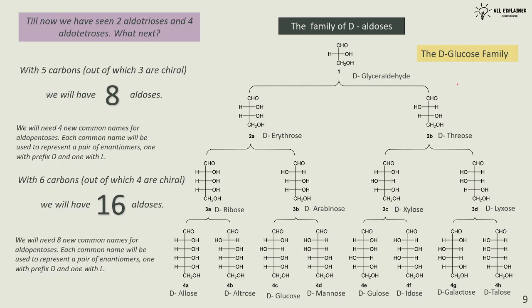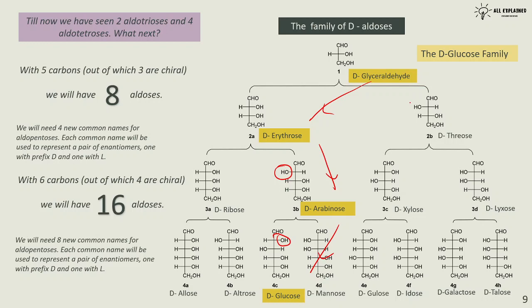The D-glucose family pathway: starting from D-glyceraldehyde, going to erythrose (OH at right), then to arabinose (first OH appears on the left), then to glucose (fourth OH back on the right). This family — glyceraldehyde → erythrose → arabinose → glucose — can be very useful to remember.